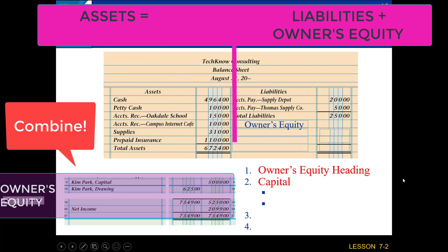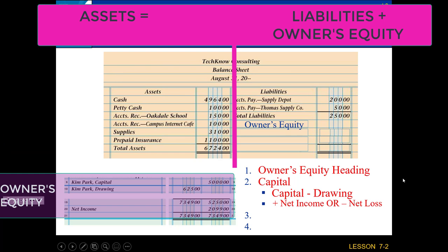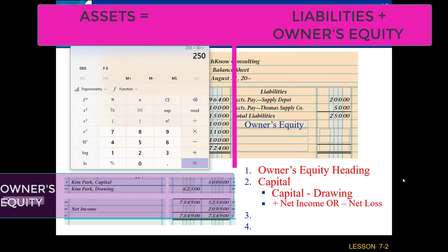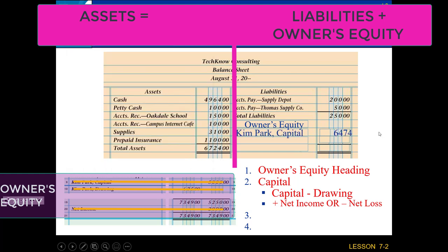To combine the three accounts, we take the capital amount and subtract the drawing — because drawing stands for withdrawal, meaning money coming out of the account. Then we add in the net income, or if we had a net loss, we would subtract it. So: capital minus drawing, plus net income (or minus net loss). In this case, we have a net income, so I take my capital of $5,000, subtract drawing of $625, and add net income of $2,099, giving a final capital balance of $6,474. So I write "Kim Park, Capital — $6,474."